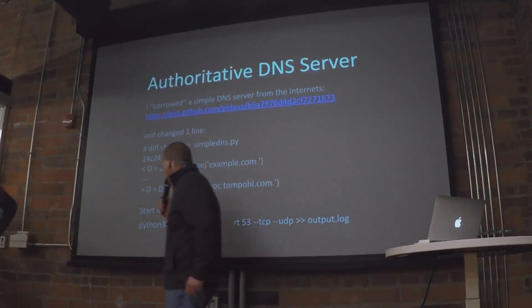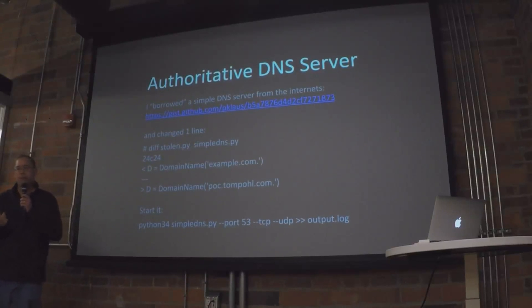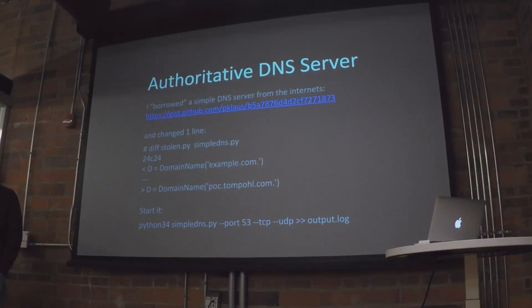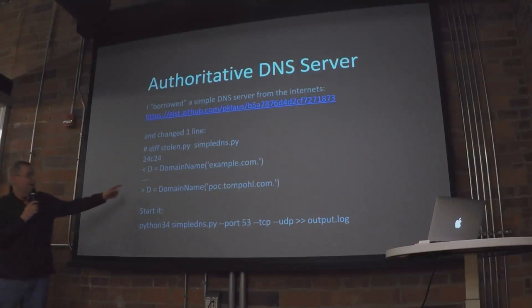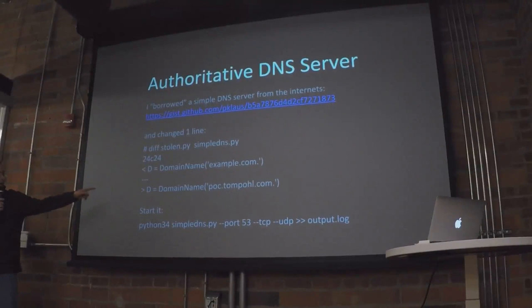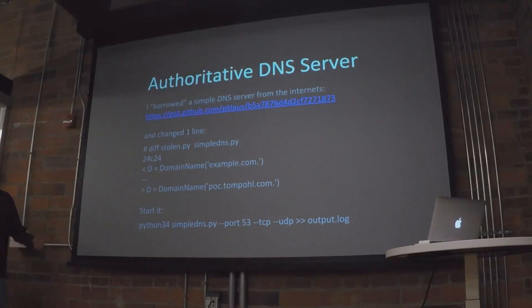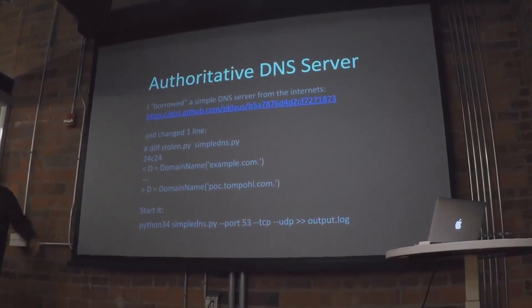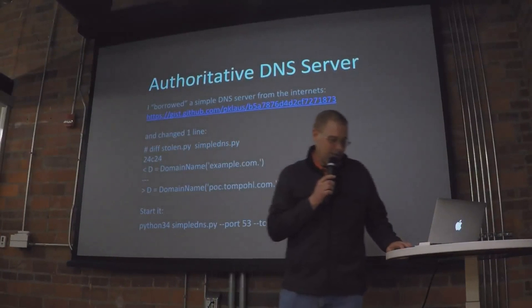On the backend, we've got an authoritative DNS server. I didn't want to run a full DNS server — I had a little box in Amazon already spun up. I found a simple Python script, literally stole it from someone on the internet, changed one line of code, and called it my own. In his code he had example.com; we used a subdomain of my personal domain, tompole.com, and made a subdomain zone called POC — proof of concept. You just say listen on UDP and TCP port 53, and output all requests and responses to a file. That's basically all the backend infrastructure we needed.